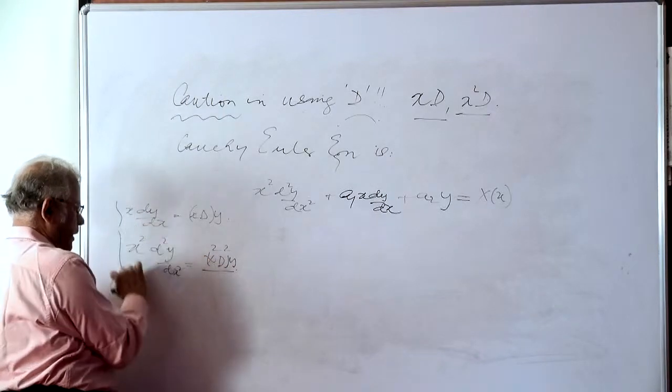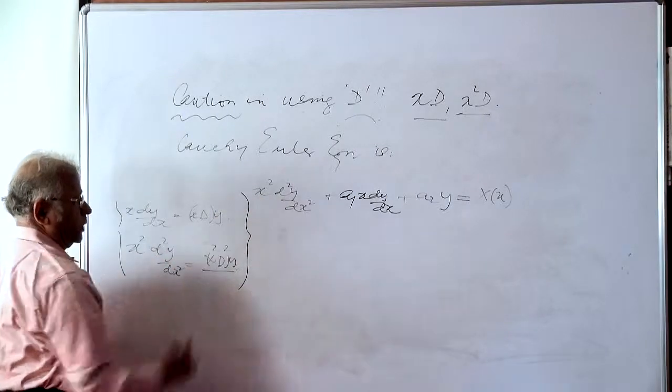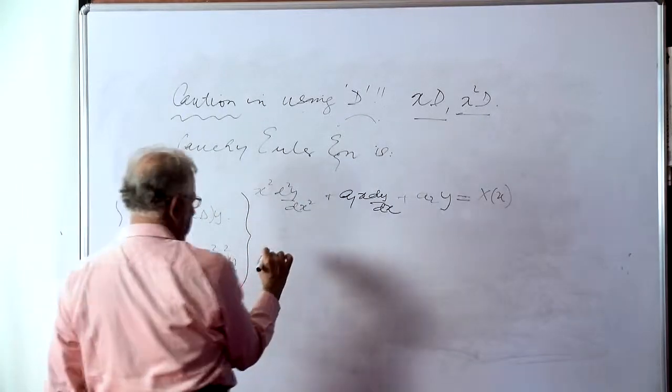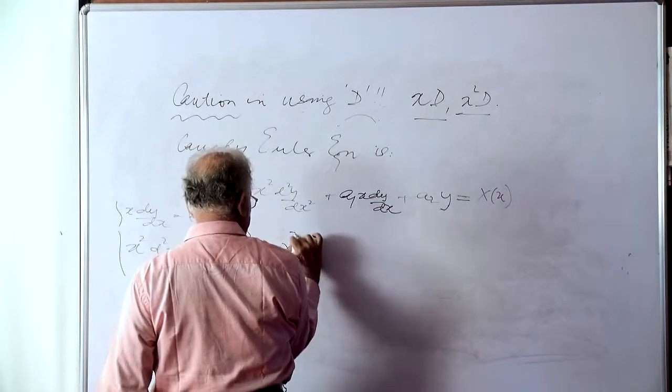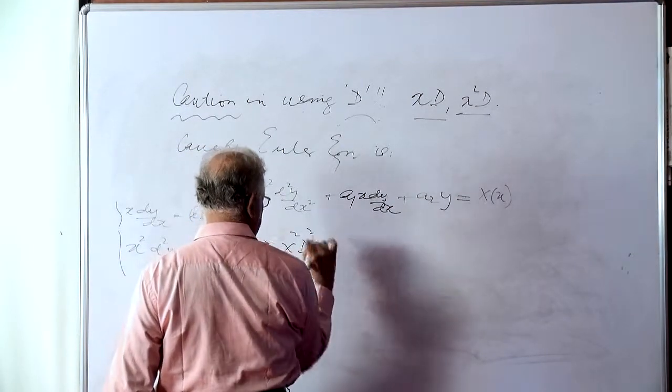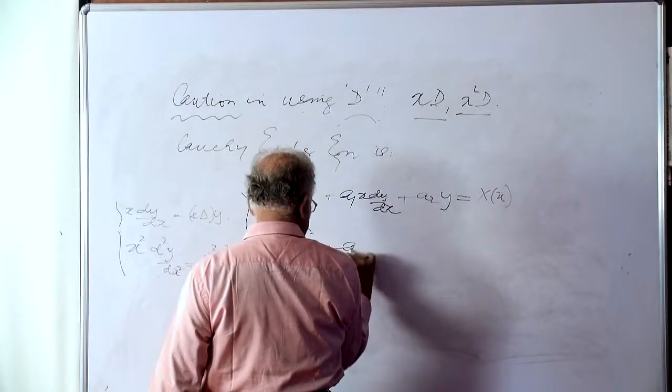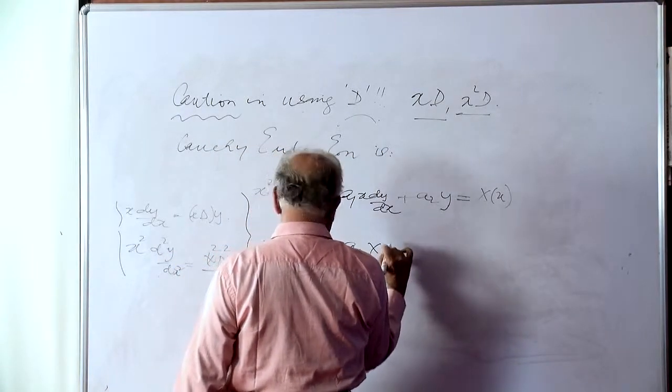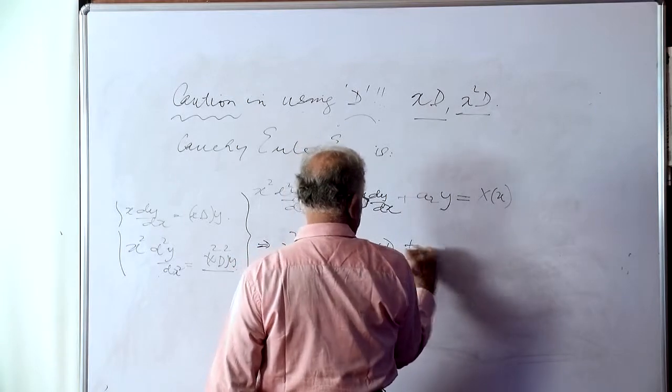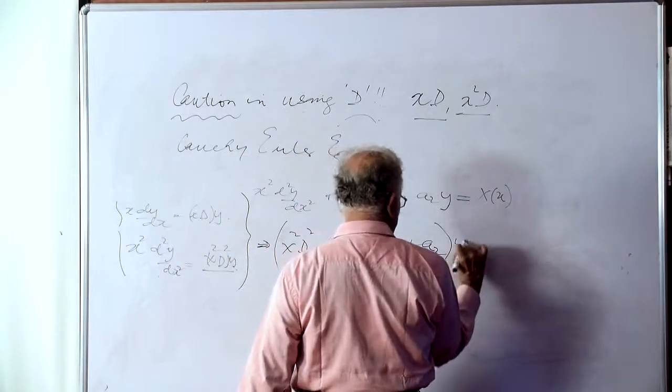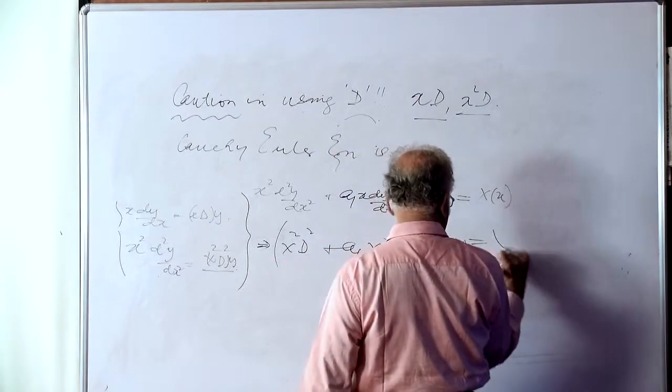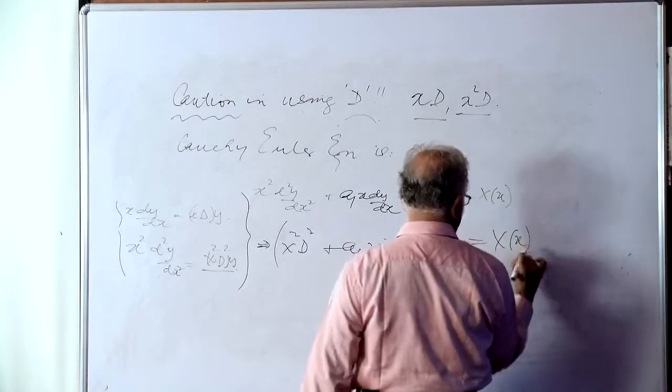So let us see how this equation will modify. It can be just written down as x squared d² plus a₁xd plus a₂ operating on y is X(x).